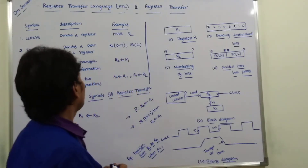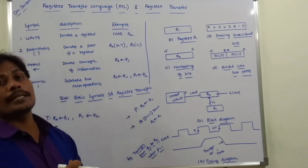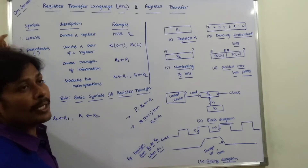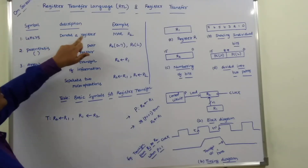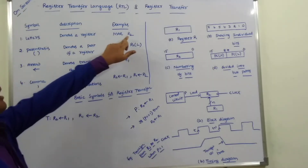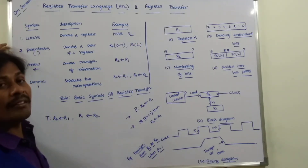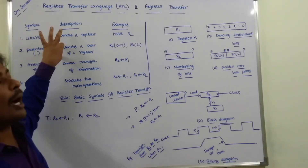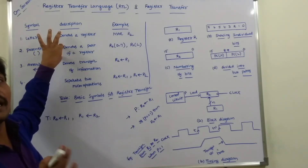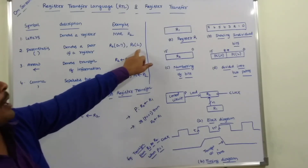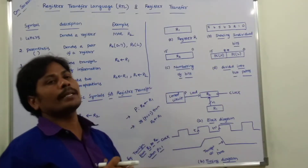The basic symbols used for register transfer are: first, letters — used for denoting a register, for example MAR or R2 (memory address register R2). Second, parentheses — used to denote part of a register, such as the lower part R2(L) or the higher part PC(H). These symbols allow us to refer to specific portions of registers.